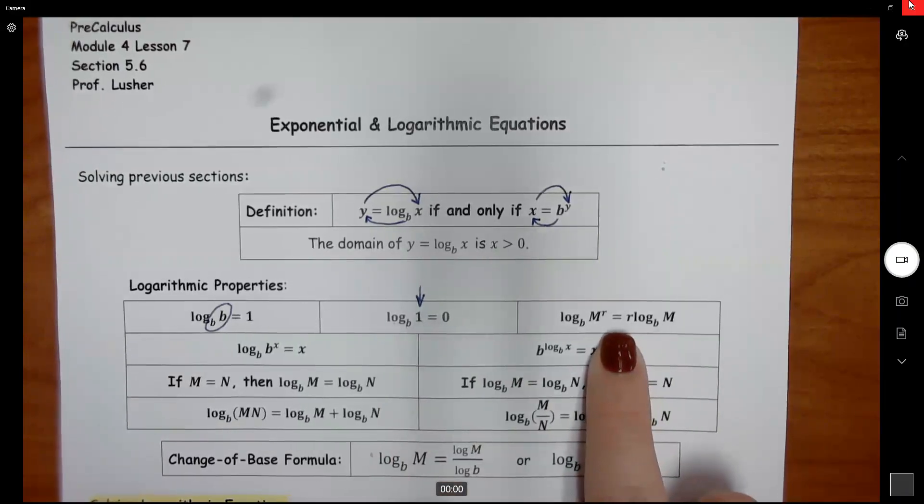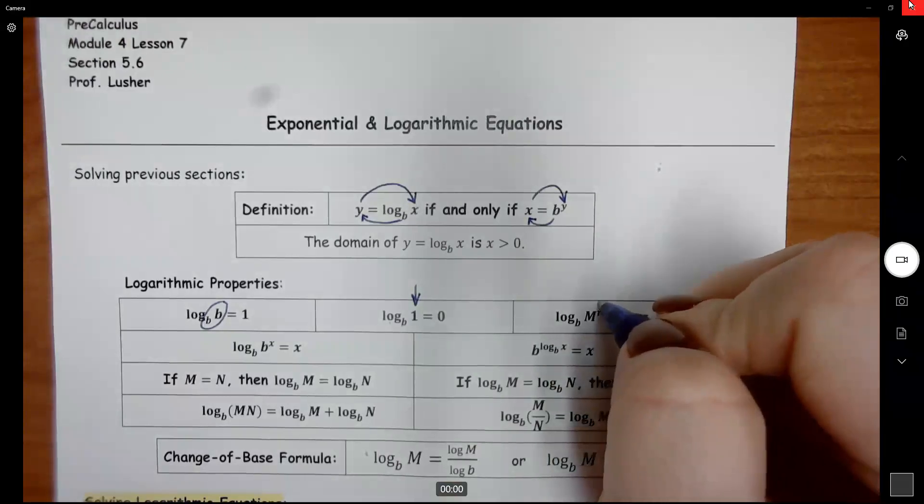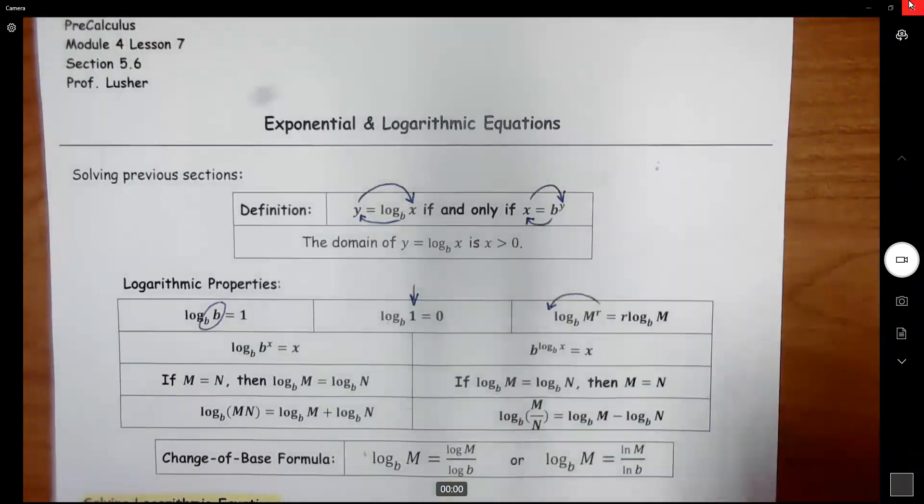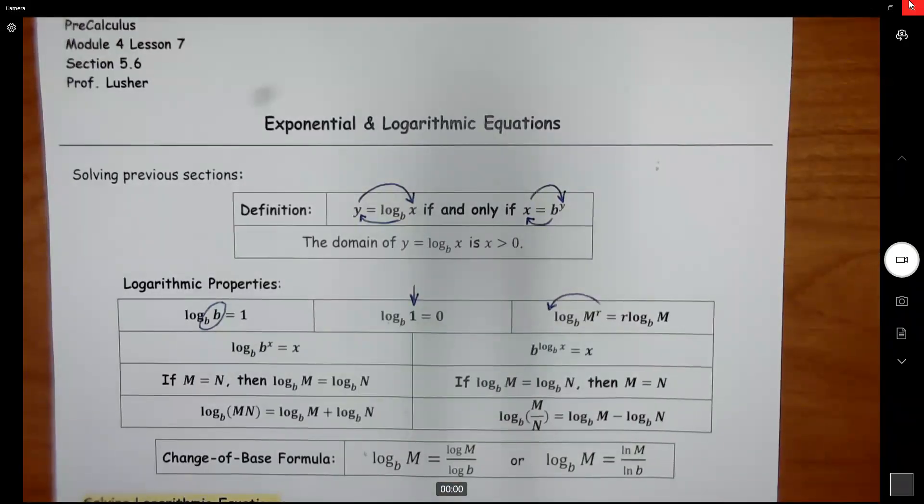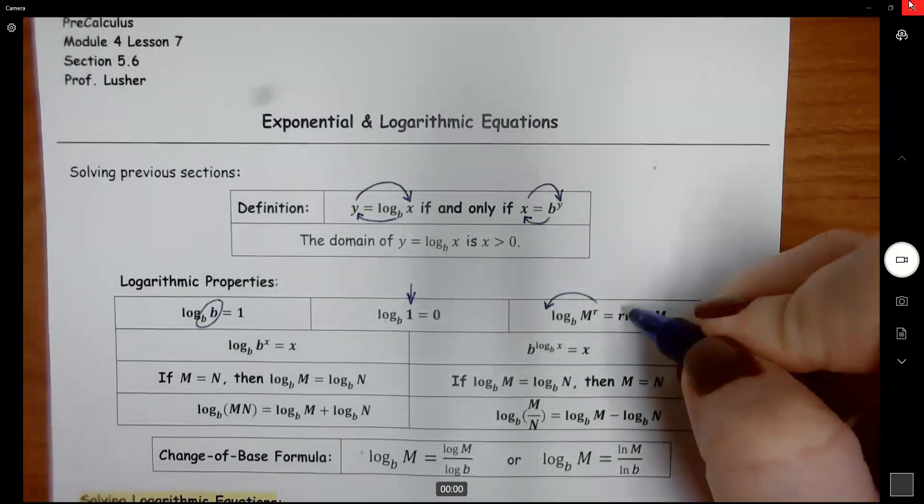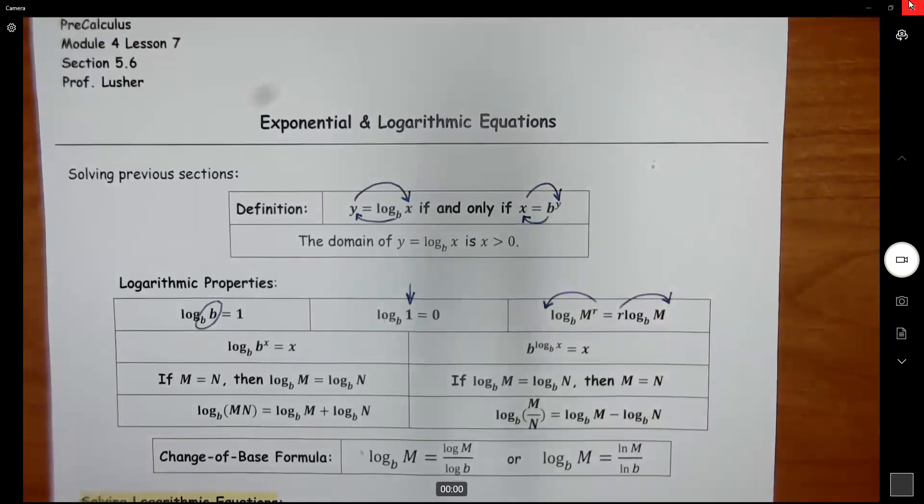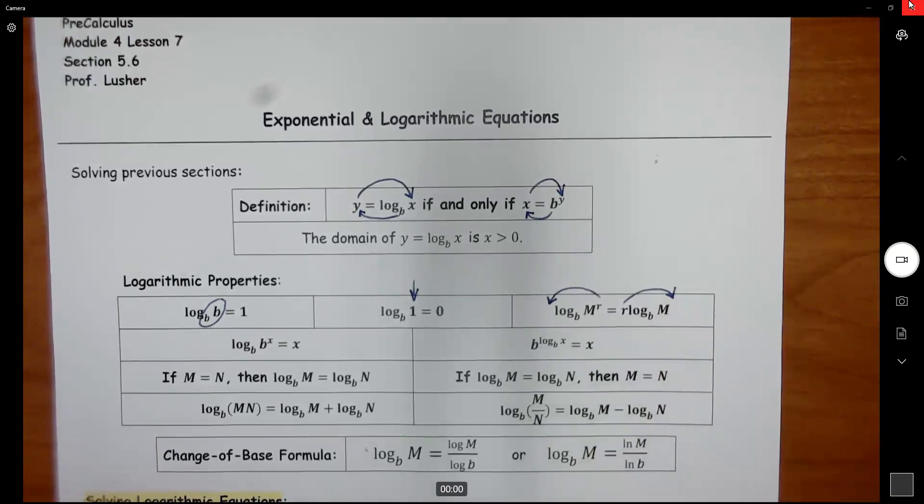This one we're going to be using quite a bit. If you have log base b of m to the r power, you can take this exponent, and you can move it in front, and it becomes a factor, or vice versa. If you have a factor right out in front of that log, you can move it up, and it becomes m to the r power. So we'll be using this one quite a bit.